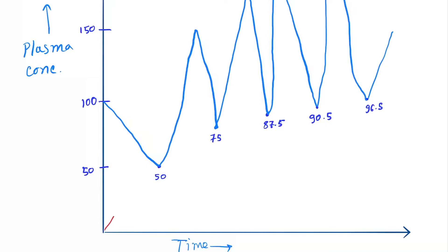If we join the graph, you can see that a steady state line is formed here, where the rate of elimination equals the rate of infusion.